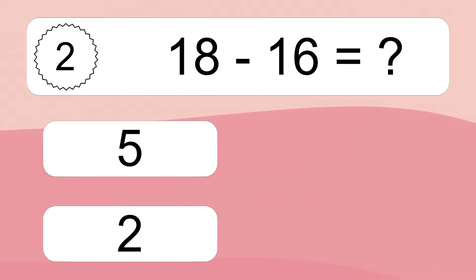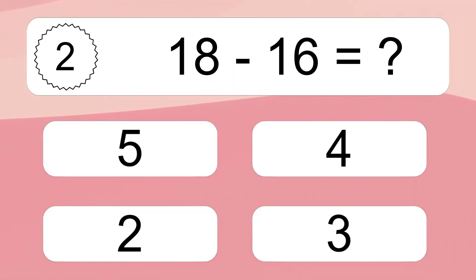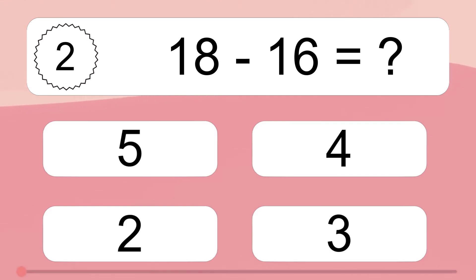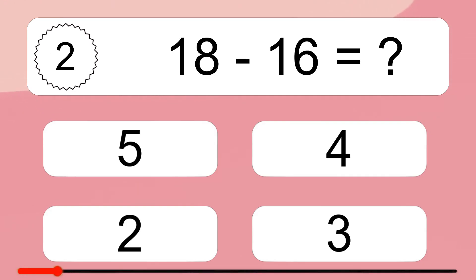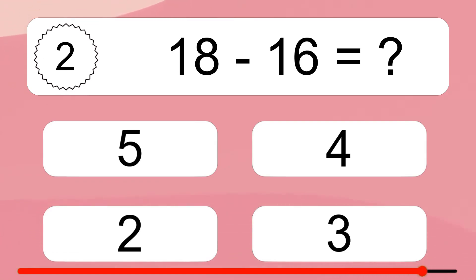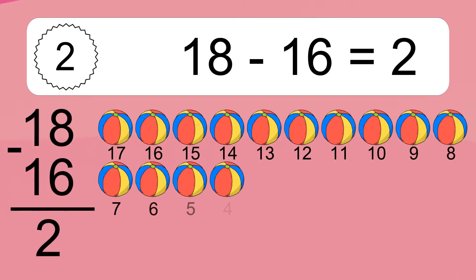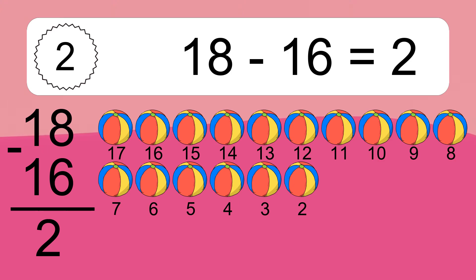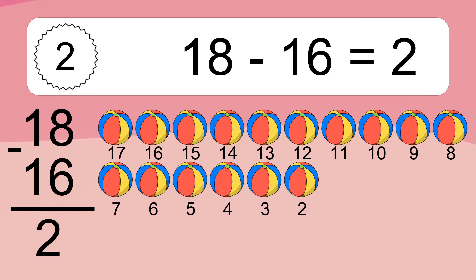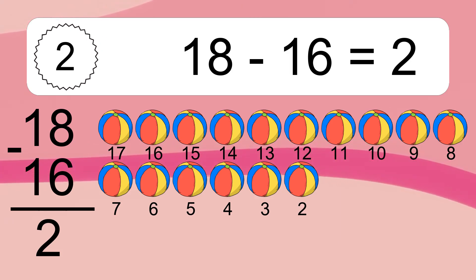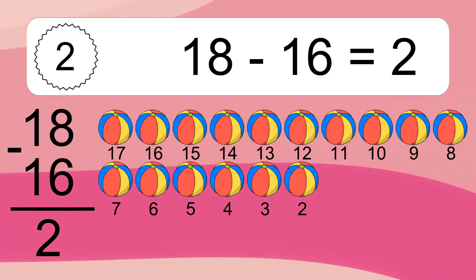18 minus 16 equals what? 18 minus 16 equals 2. Let's count it: 17, 16, 15, 14, 13, 12, 11, 10, 9, 8, 7, 6, 5, 4, 3, 2.